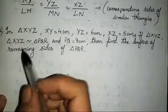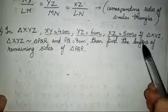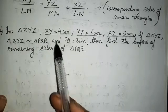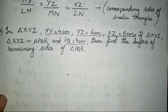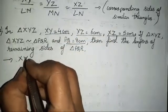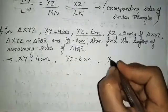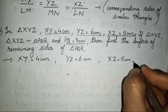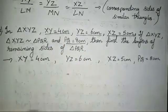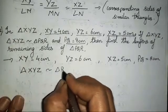Second question: in triangle XYZ, XY is 4 cm, YZ is 6 cm, XZ is 5 cm. If triangle XYZ is similar to PQR and PQ is 8 cm, then find the length of the remaining sides of PQR. This is also very easy. First we will write down whatever has been given: XY is 4 cm, YZ is 6 cm, XZ is 5 cm, and PQ is 8 cm. Triangle XYZ is similar to triangle PQR.